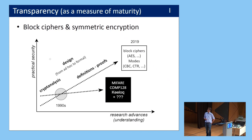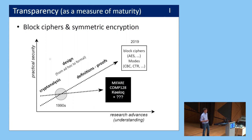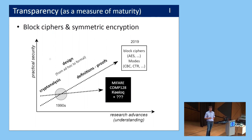The general background is this idea that transparency can be viewed as a measure of maturity. If you think about block ciphers and symmetric encryption, I would say in 2019, if you need to do symmetric encryption, in a vast majority of cases, the right thing to do is to use a standard like the AES and a mode of operation for which we have proofs and good analyses — and probably not proprietary ciphers anymore, unless exceptions.